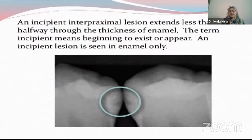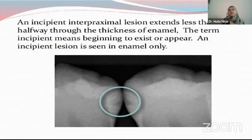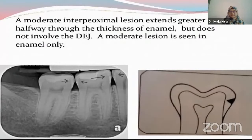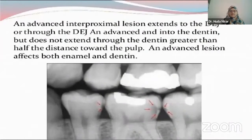An incipient lesion marks about 50% enamel damage — anything less than that will not appear on a radiograph and is very hard to appreciate. A moderate lesion involves more than 50% of the enamel up to the DEJ but not breaching the DEJ. Then we have an advanced interproximal lesion where the DEJ has been breached, dentine is involved, and there is radiolucency in the dentine as the arrows could depict.